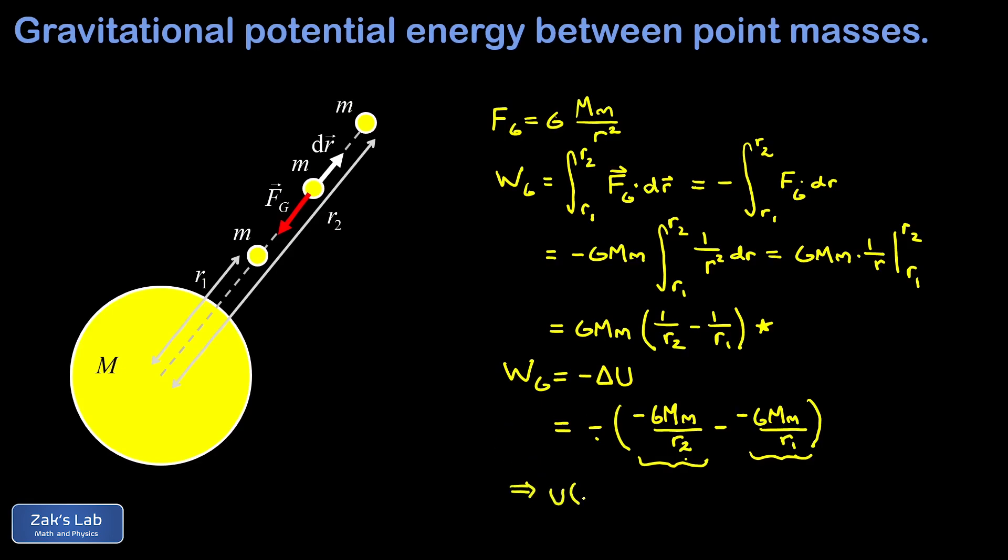The potential energy between two point masses as a function of their separation distance is given by negative G big M little m over R.